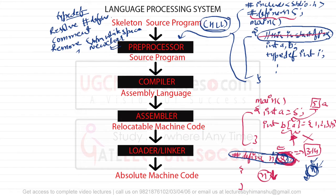This `#define` statement is not allocating memory, and it is not giving memory at runtime. Before even compiling the program, wherever N is mentioned in the program, that N will be replaced by the particular value. For example, if we have `#define N 5`, that N will be replaced by 5.